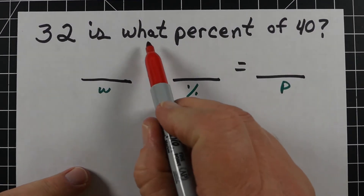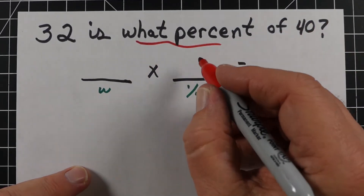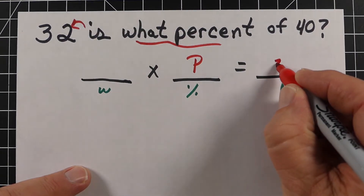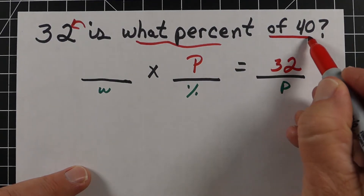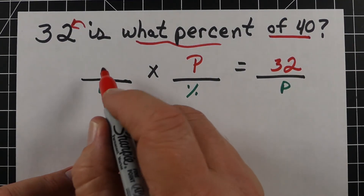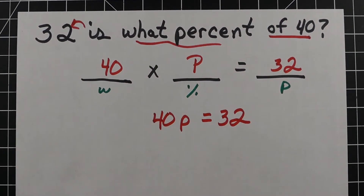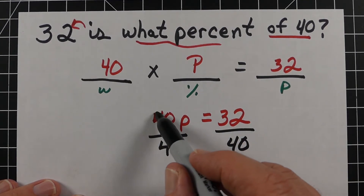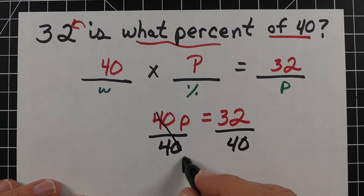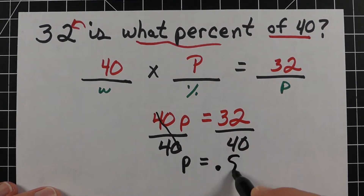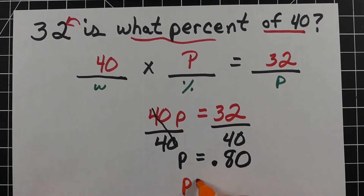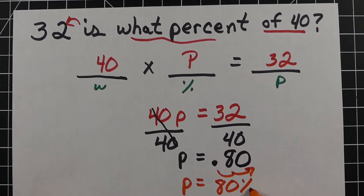Final example: '32 is what percent of 40?' We use variable P for the unknown percent. The 32 is the part and 40 is the whole, giving 40P equals 32. Dividing both sides by 40 gives P equals 0.8. Moving the decimal two places to the right — multiplying by 100 — gives 80%. So 32 is 80% of 40.